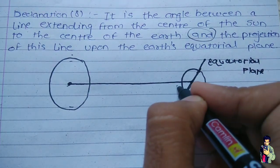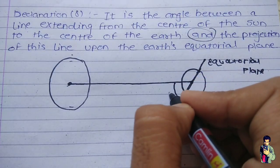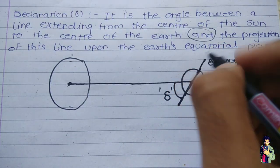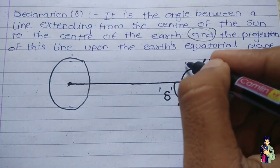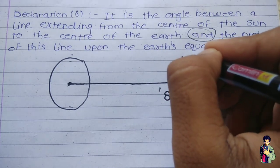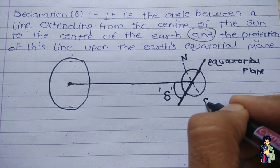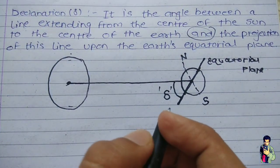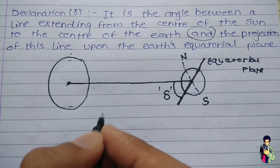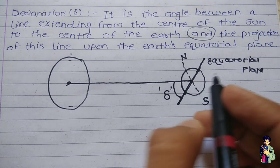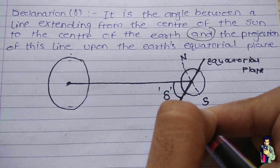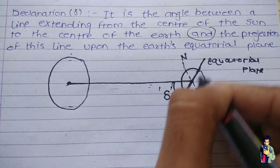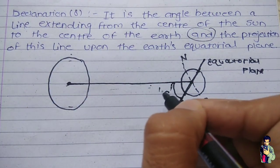This angle is known as the declination angle, denoted by delta. The perpendicular to the equatorial plane defines the north pole and the south pole. It can also be written as the angular displacement of the sun from the earth's equator, which is known as the declination angle.